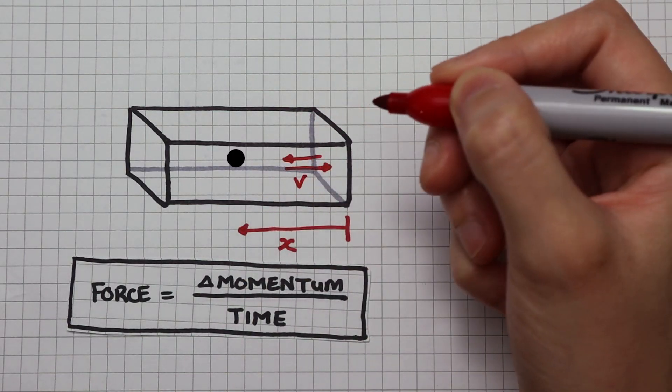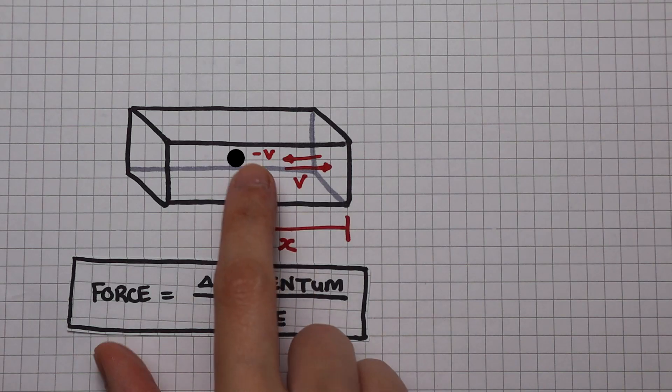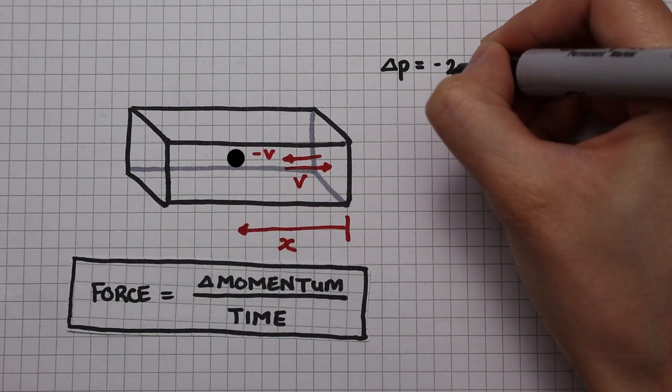If the initial speed is v, the final speed is minus v. The negative sign takes into account the change in direction. So the change in momentum is minus 2mv.